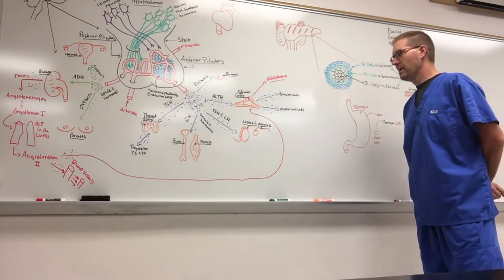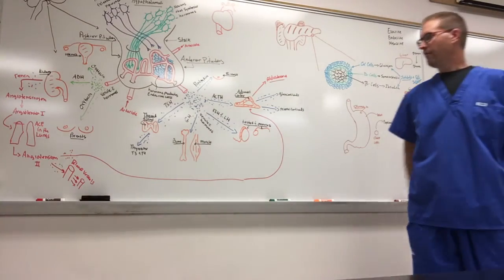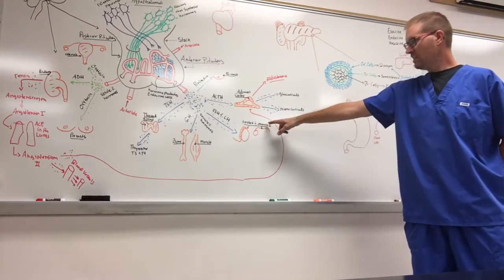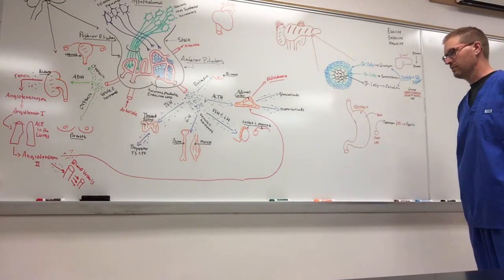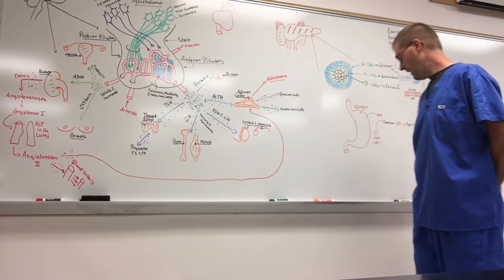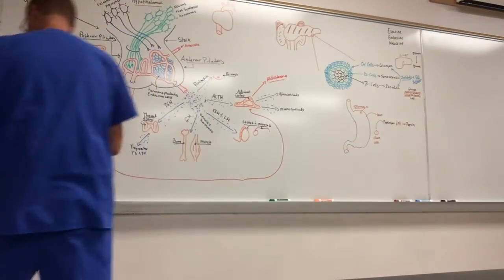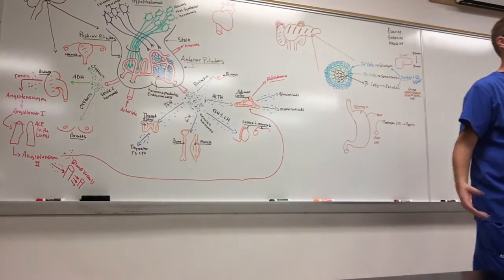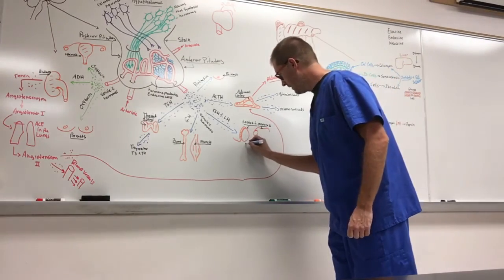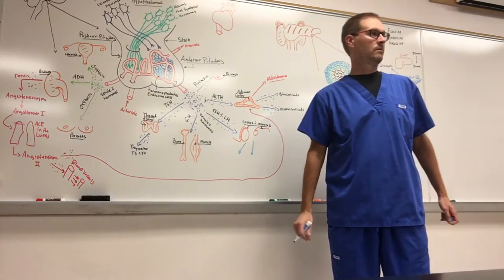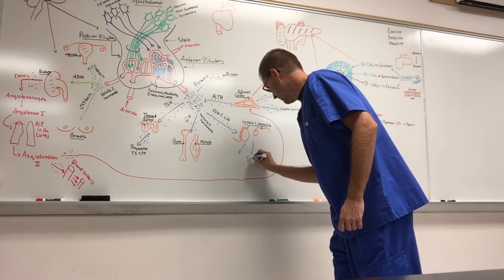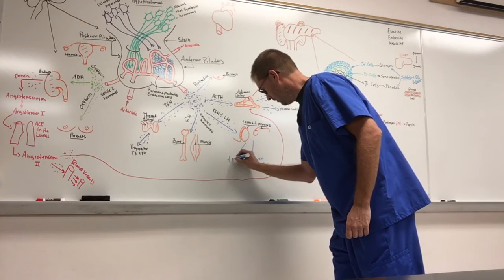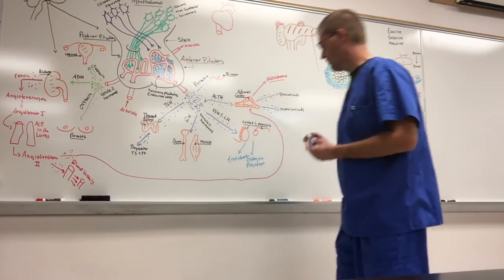Another set of hormones that come out of the anterior pituitary are FSH and LH. That's follicle-stimulating hormone and luteinizing hormone. These primarily act upon the testes and the ovaries. So these are primarily sex hormones. And then the testes and the ovaries themselves release hormones that are involved in secondary sexual development and, of course, are involved in the menstrual cycle, not something we're going to talk about in any big detail. But what are the major hormones that are released by the testes and ovaries? Estrogen. Estrogen. Progesterone. Progesterone. And then testosterone. Testosterone as well.